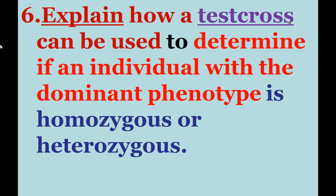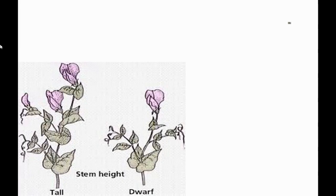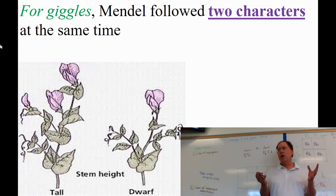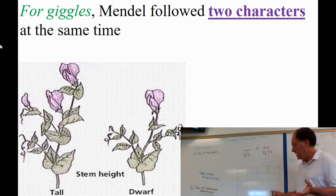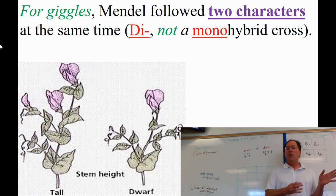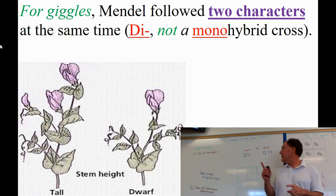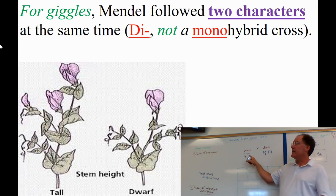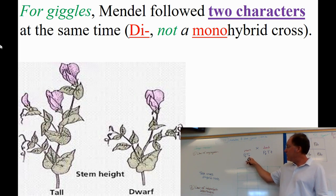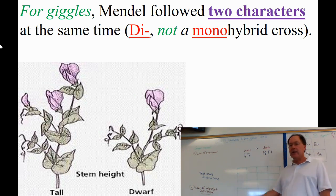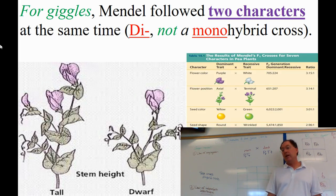Mendel had a good thing going, so he said 'I'm bored, I'm going to look at two characteristics' — say flower color and height. This is called a dihybrid cross; hybrid means a mix. He found true-breeding plants for both characters, put them together, and knew the offspring would be heterozygous for both flower color and height. He got sperm and eggs from each and put them together to see what happens in this expanded Punnett square.